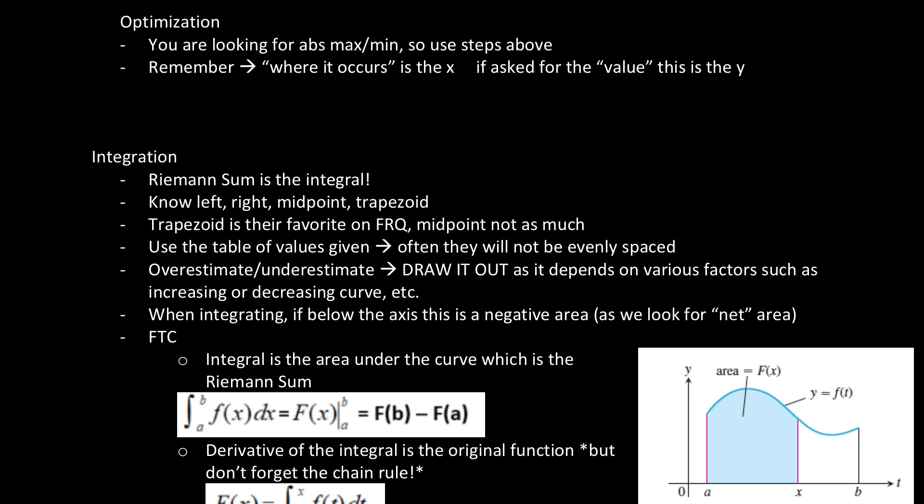For integration, Riemann's sum is the integral. Know your left, your right, your midpoint, and your trapezoid. Trapezoid is typically their favorite on FRQ. Midpoint, not as much. But midpoint probably will appear somewhere on the multiple choice. Use a table of values given. Often they will not be evenly spaced. So be careful with that. Overestimate, underestimate, know how to figure out if it is over or under. Draw it out. So draw it out, and if you get a situation like this where you have left endpoints and the curve is increasing, obviously you're going to have an underestimate, whereas if you did right endpoints, it would be an overestimate. And then for trapezoid rule, same kind of concept. Draw your trapezoids out to determine if it's over or under estimate. And then when integrating, make sure if it's below the axis that this is a negative area. So it's okay to put a negative area because we are looking for net areas.